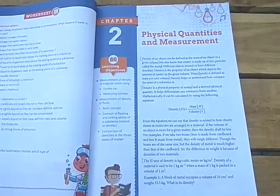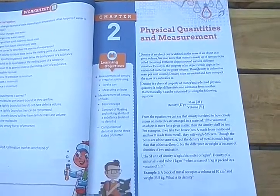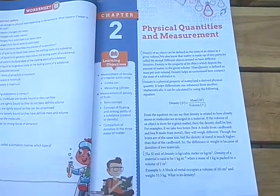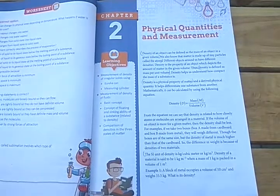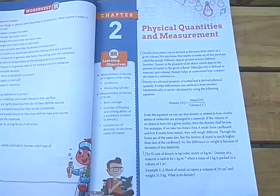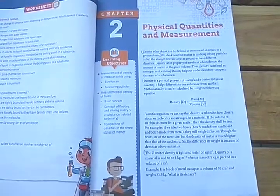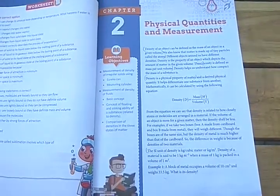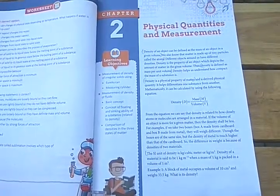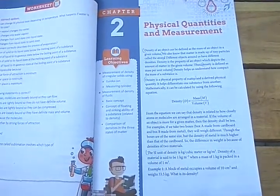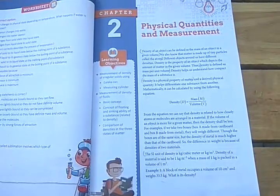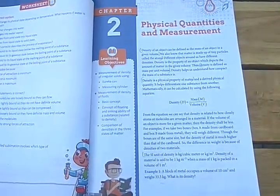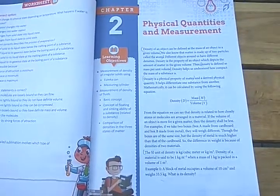From this equation we can say that density is related to how closely atoms or molecules are arranged in a material. In class 6 we already learned about matter, and in that lesson we learned about atoms. Matter is made up of tiny particles called atoms.